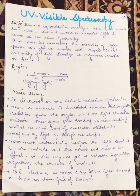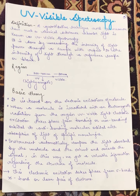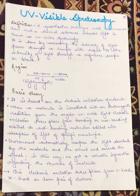In this video we are going to start with UV-visible spectroscopy — that is ultraviolet-visible spectroscopy. In this particular video we will be mainly focusing on the principle and the basic theory behind it. It is a quantitative technique that is used to measure how much a chemical substance absorbs light.